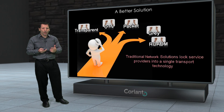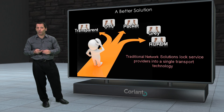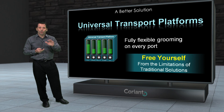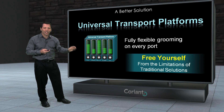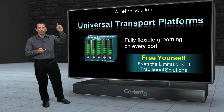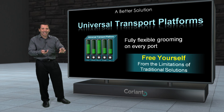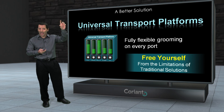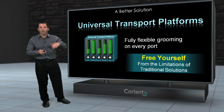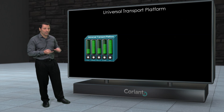So what are we doing at Coriant? We've come up with a much better solution to handle the type of traffic demands placed on transport networks today. It's a solution we call universal transport platforms. What we've done is taken all of the functions you need in the network and integrated them into a single platform. But we've also enabled you to more flexibly provision the traffic on each port — not only can I tune in exactly what I want at that moment, a mixture of packet and circuits on a port, but I can also change the way I'm managing traffic on that port over time: both the flexibility and the adaptability.